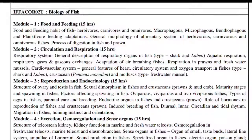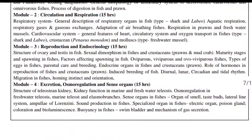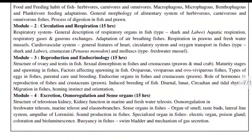The cardiovascular system covers general features of the heart, circulatory system and oxygen transport in fishes — types in sharks and labyrinth fish, crustaceans (Penaeus monodon), and molluscs including freshwater mussels.